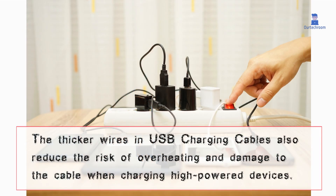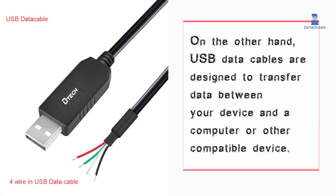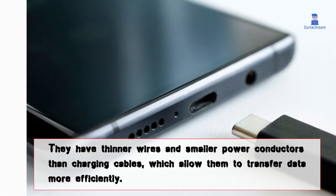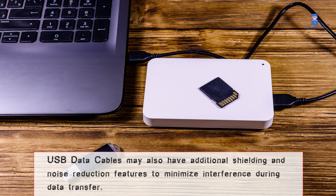reduce the risk of overheating and damage to the cable when charging high-powered devices. On the other hand, USB data cables are designed to transfer data between your device and a computer or other compatible device. They have thinner wires and smaller power conductors than charging cables, which allow them to transfer data more efficiently. They may also have additional shielding and noise reduction features to minimize interference during data transfer.